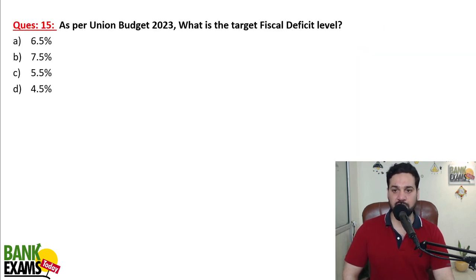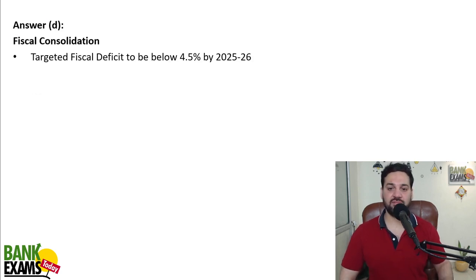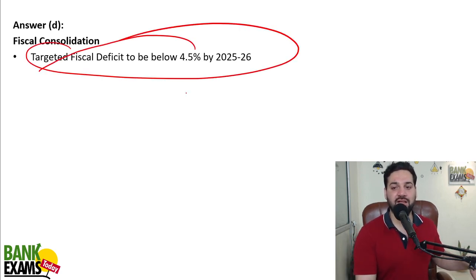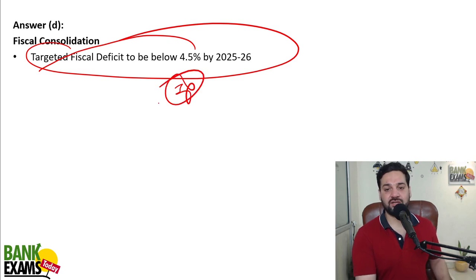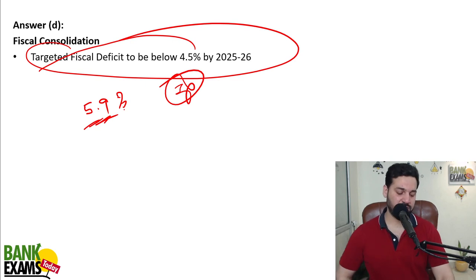As per Union Budget 2023, what is the target fiscal deficit level? This year it is 5.9% but the target is 4.5%. This has been repeated multiple times. 5.9% is the actual level this year; 4.5% is the target.